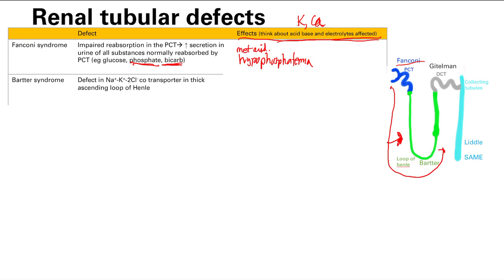What will the pH be in Bartter syndrome? Remember, same as with loop diuretics: you're going to get more sodium in the collecting ducts. That sodium gets reabsorbed and H-plus is secreted for charge balance — you're losing H-plus — so you get a metabolic alkalosis, increased blood pH. For potassium, you get that potassium exchange for the sodium, so you're going to get hypokalemia.